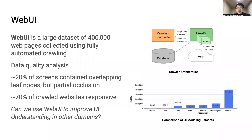We collected WebUI, a large dataset of 400,000 rendered web pages associated with automatically extracted metadata. This is several times larger than previously released datasets because we could collect it using highly automated crawling. The crawled data contained some noise, but most screens met basic criteria for visual modeling. 20% of screens had some partially occluded elements, and 70% of pages were responsive.